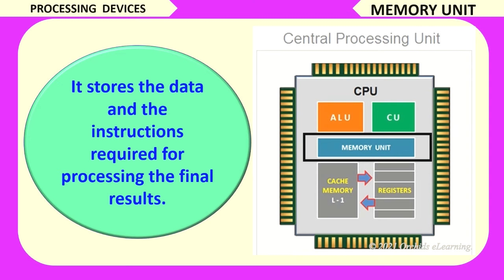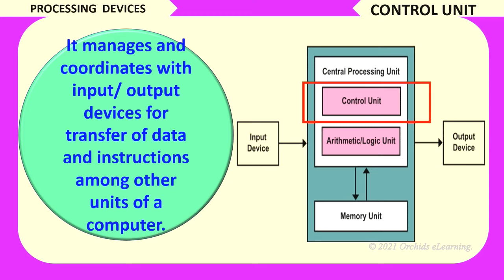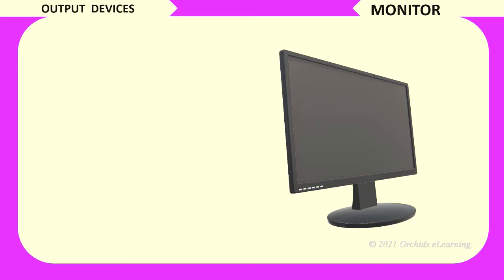Control unit manages and coordinates with input and output devices for the transfer of data and instructions among other units of a computer. Output devices show the result after processing the input.